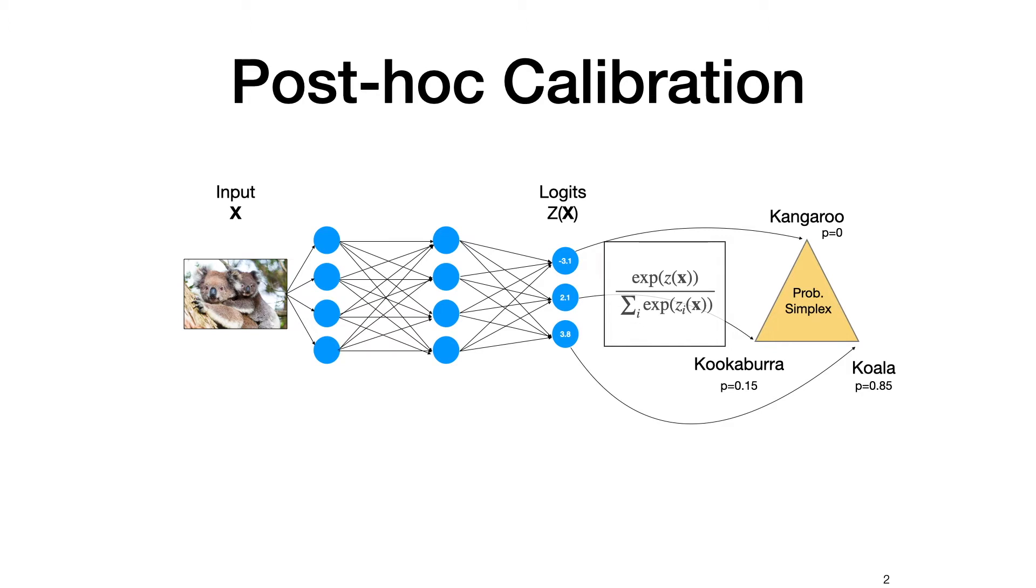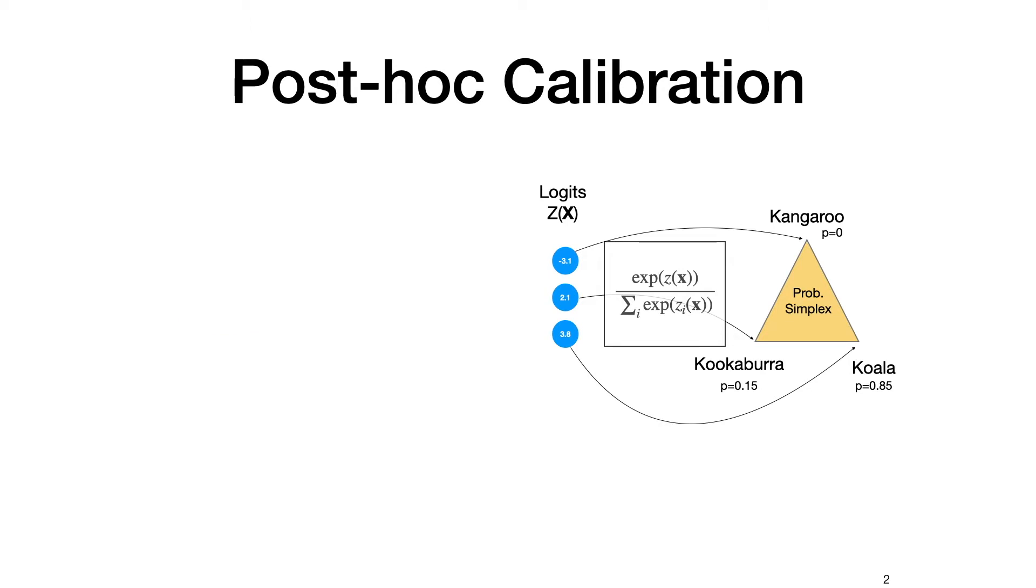One way to avoid miscalibration is to recalibrate the trained base model using a small calibration data. Post-hoc calibration methods usually keep the base model fixed and learn a transformation on the trained model logits using a held-out calibration data to make the new transformed logits calibrated.